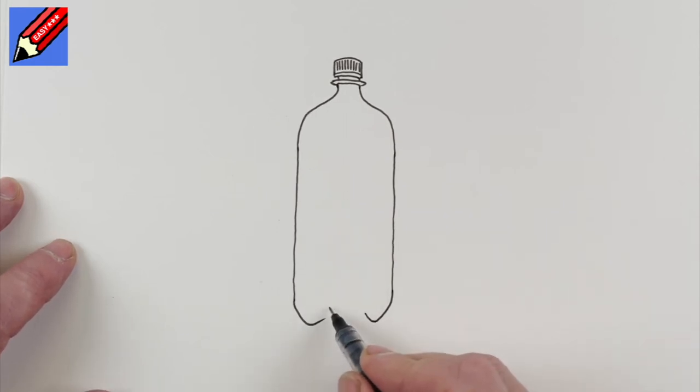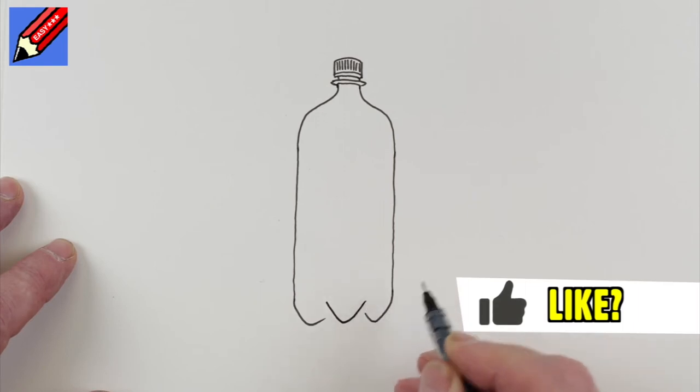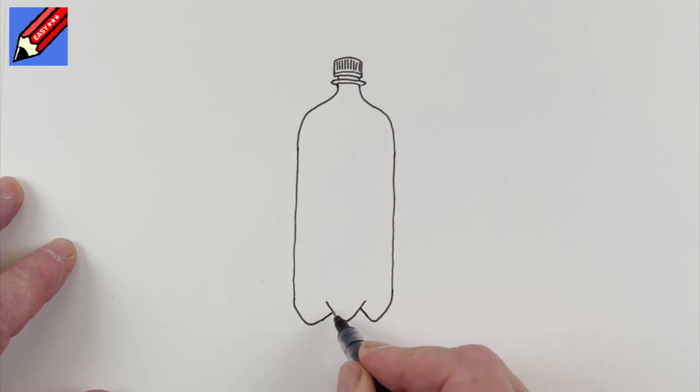That's gone not quite even is it. That's the trouble when we're not planning it out beforehand and just doing freehand. So then we can go like that and then we want another kind of one like that.